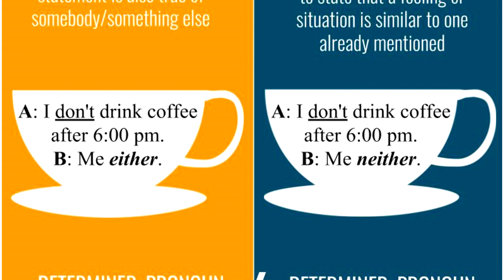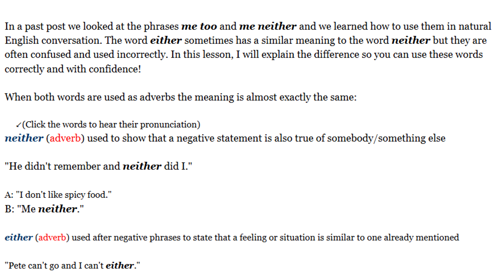In a past post we looked at the phrases 'me too' and 'me neither' and we learned how to use them in natural English conversation. The word either sometimes has a similar meaning to the word neither, but they are often confused and used incorrectly. In this lesson I will explain the difference so you can use these words correctly and with confidence.